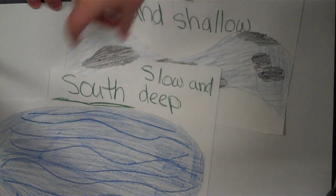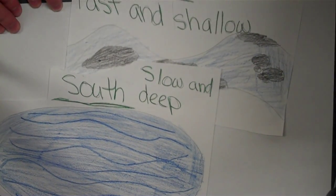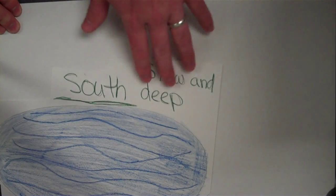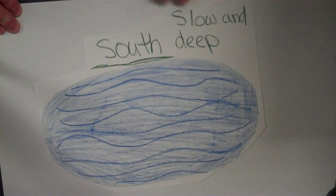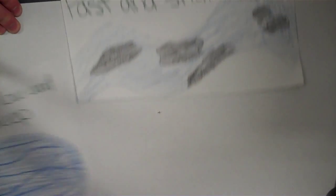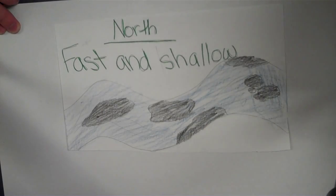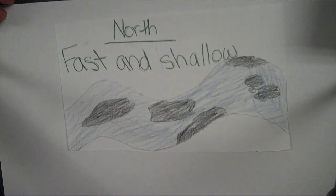The North was very different than the South. The North had cities and factories, and their economy was based on manufacturing. The North's rivers were shallow and fast moving.